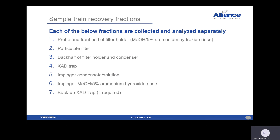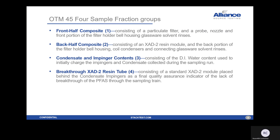These are the seven fractions collected from the sample train. There's the probe and front half of the filter holder, the particulate filter, the back half of the filter and the condenser, the XAD trap impinger condensate solution, the impinger rinse, and a backup trap. Those seven fractions are then combined into four: front half composite, back half composite, condensate and impinger contents, and the breakthrough trap as number four.